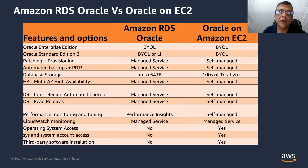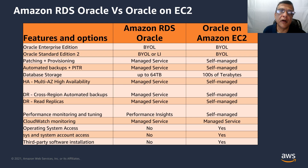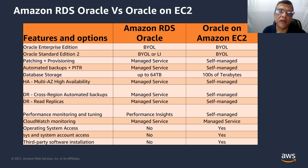To make a choice between Amazon RDS Oracle and Oracle running on EC2, we have to compare the features and options of both destinations. Oracle Enterprise Edition and Standard Edition 2 are available in BYOL and license-included options, and they differ for Amazon RDS Oracle and Oracle on EC2. The main difference is managed service versus self-managed. Managed service means automated operation through an API, making it easy to provision or make changes through a menu. Self-managed means the customer has to manage and maintain application and database changes in the environment.